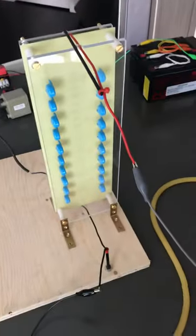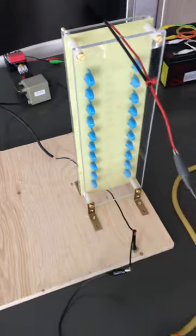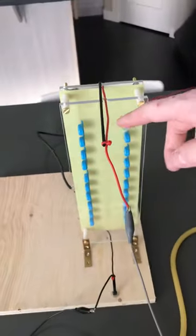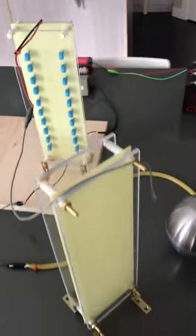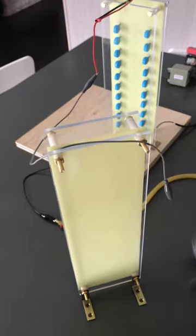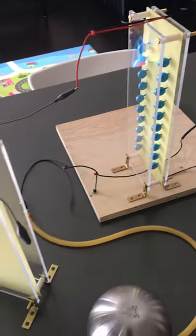This is my Cockroft Walton voltage multiplier. This is a positive voltage multiplier. I'm planning on building a negative voltage multiplier to stretch my original spark gap from 6 inches to 12 inches.